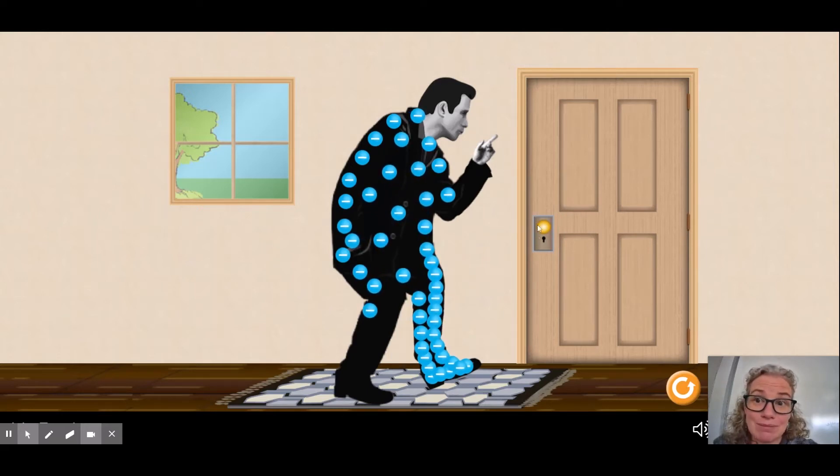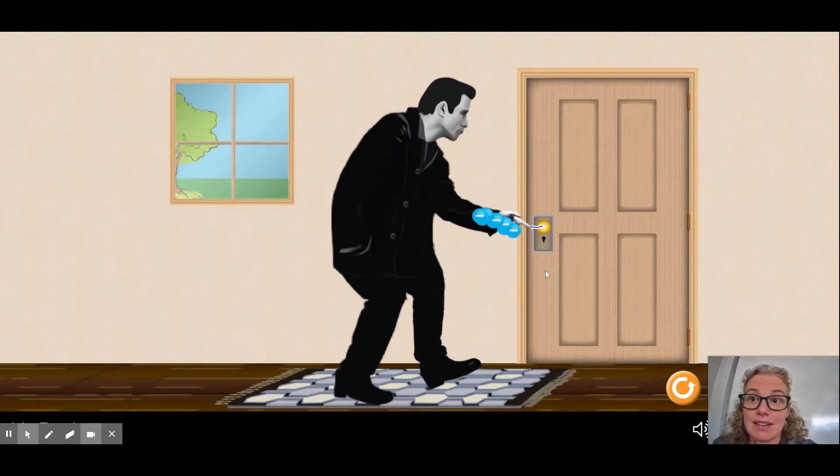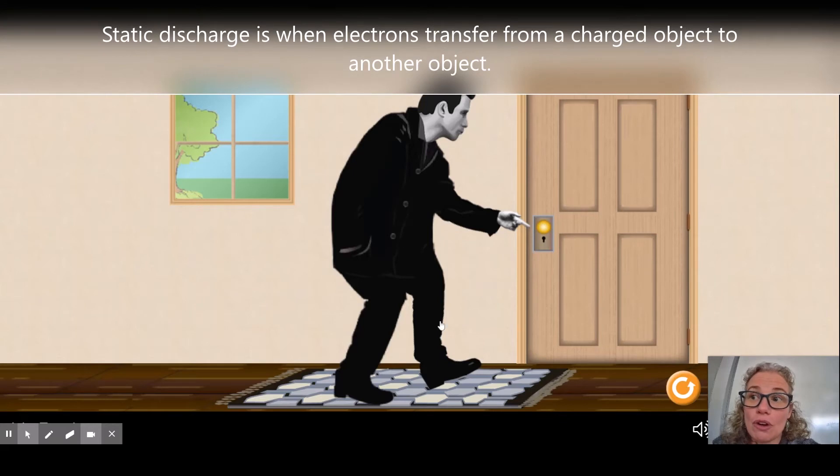Zap! He got a shock. Okay, that's called static discharge. So all the overall negative charge that he had in his body transferred out through his finger and to the door knob. So let's build up his static electricity again. Now he has a net negative charge, meaning overall he's got a negative charge.